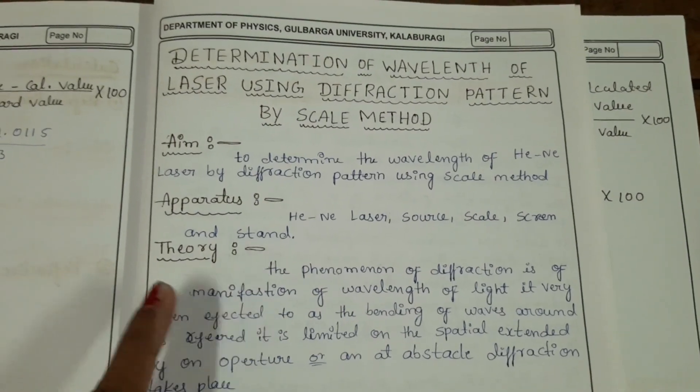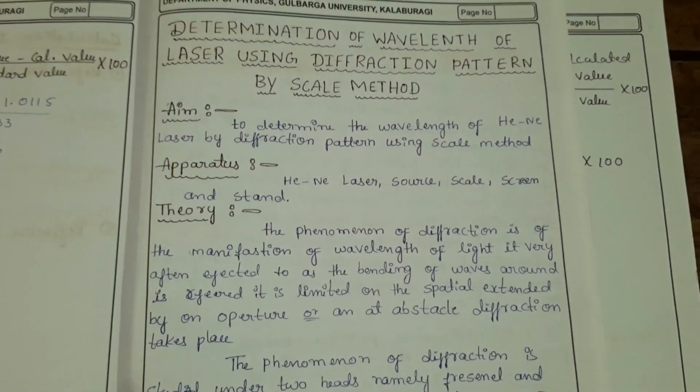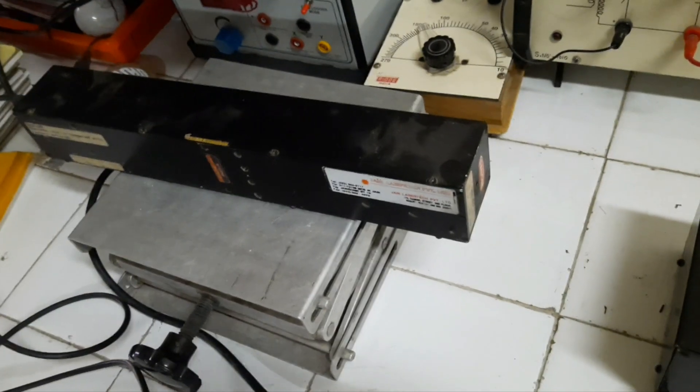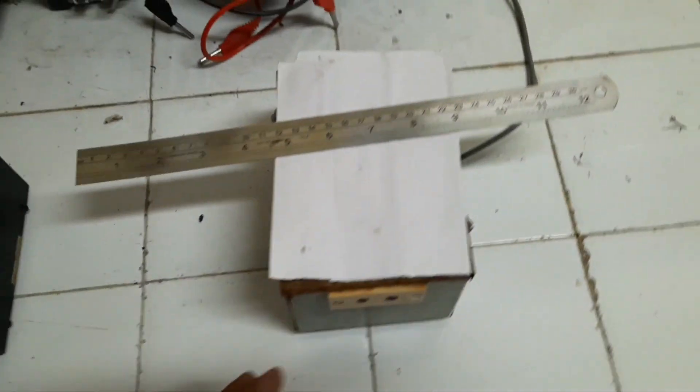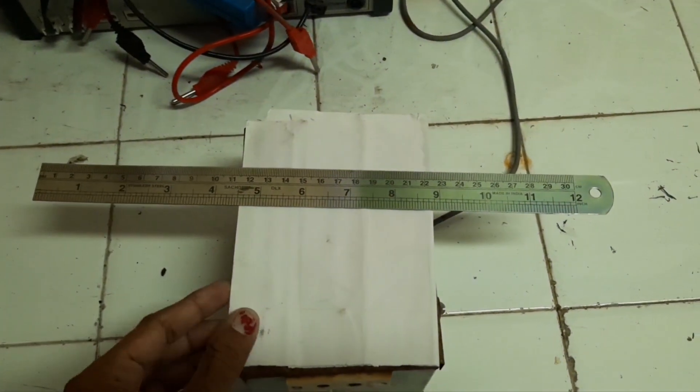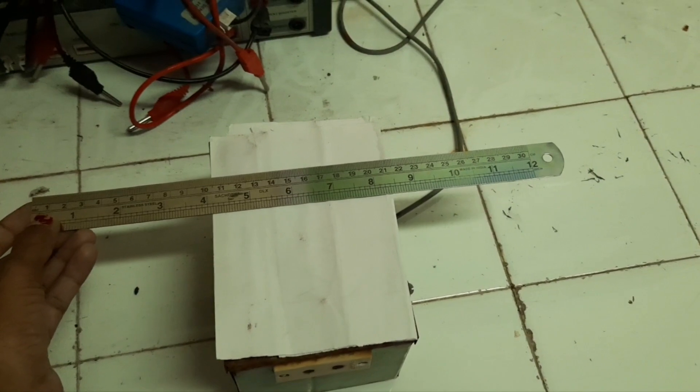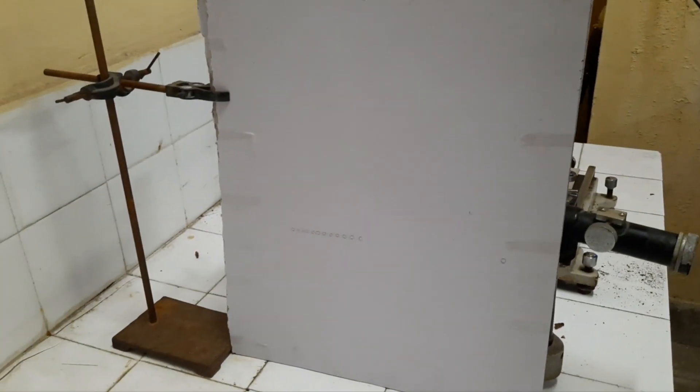The apparatus required are helium-neon laser source, scale, screen, and stand. This is the helium-neon laser source with on and off button. This is where we have to keep the scale in this stand, and this is the screen to get the diffraction pattern.